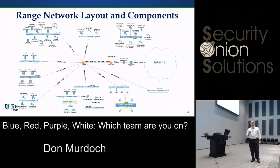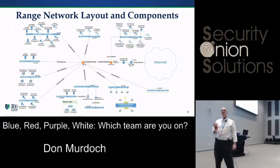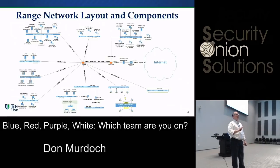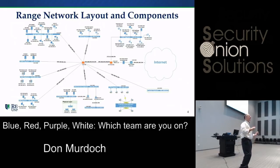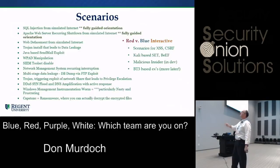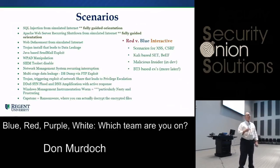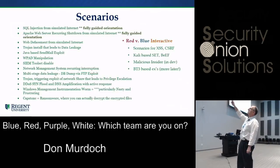Our range environment has roughly 15 VLAN segments and IP address ranges — all virtualized and self-contained. As Security Onion aficionados, there are dozens of places and things you can monitor, and dozens of educational outcomes you can achieve. I'm going to show you how we use Security Onion in the range. The kinds of scenarios we can execute span red, blue, white, and orange teams. Many are tightly scripted and several take hours to run.